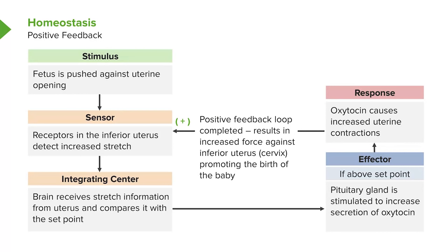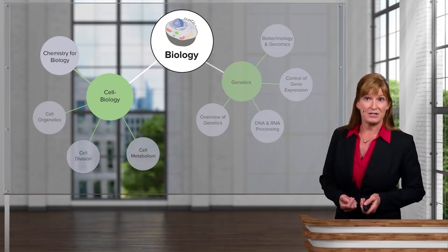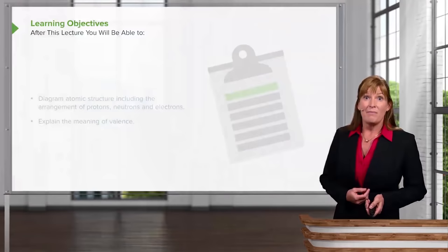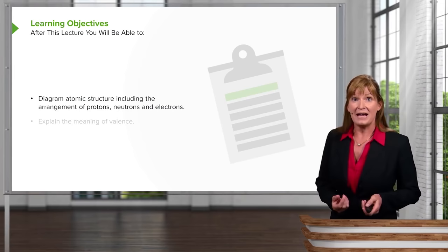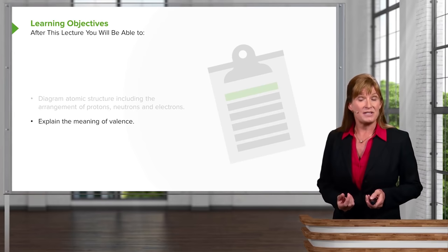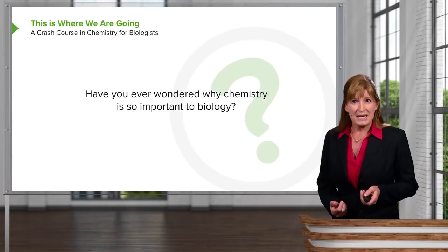It's the expulsion of the baby that actually shuts down this positive feedback loop. So you can see a positive feedback loop doesn't really maintain anything — it escalates and escalates — while a negative feedback loop will regulate and keep things within homeostasis. In order to gain a great understanding of biology, it's critical that we have a solid foundation in chemistry, at least as it applies to biological molecules.